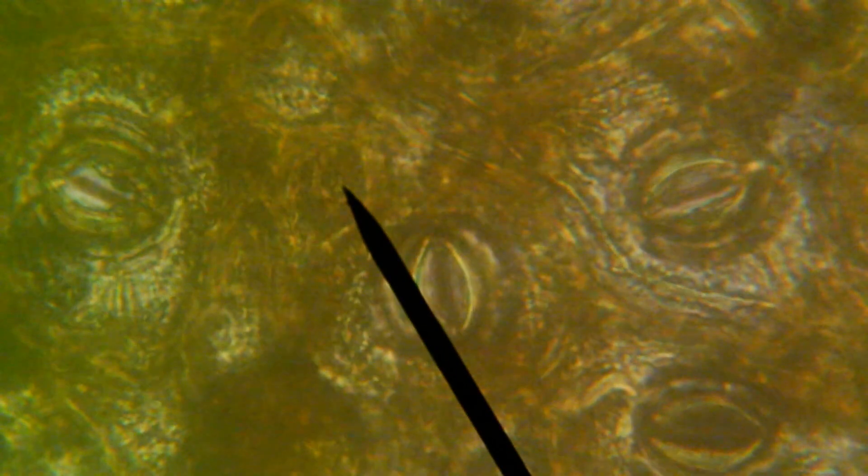So this is the 40 times objective. Now normally at this level we want to reduce the amount of light coming in, so we close the diaphragm a bit. And it only takes some small adjustments to focus this time.